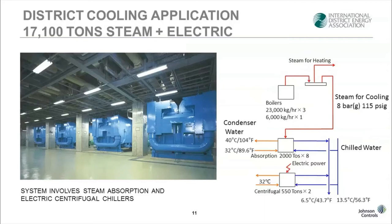This second system is a 17,000 cooling ton system in operation since 1998. It cools surrounding buildings and a major subway station. There are a total of 10 chillers — eight are absorption and two are electric centrifugal type. The absorbers are driven by 8 bar (115 psi) steam from gas-fired boilers, with no gas turbine or waste heat recovery boiler. It's a hybrid system where absorption and centrifugal chillers work in parallel, and depending on the time of day, the right type and number of chillers are operated to keep operational costs optimal.